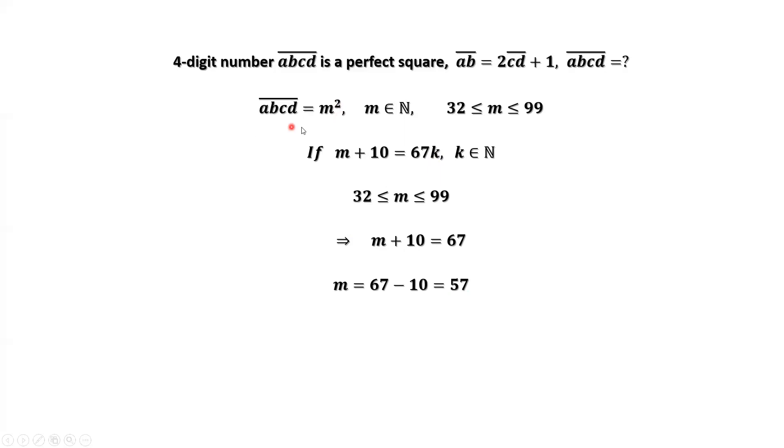M equals 57. ABCD equals M squared, which is 3249. We need to check if this is the answer. From the given condition, ABCD equals 3249. This means AB equals 32, CD equals 49. We want to check if this given condition is true. AB does not equal 2 times CD plus 1. You can see CD is bigger than 32. It's impossible. AB equals 2 times CD plus 1. From here, we have this result. M cannot be 57.